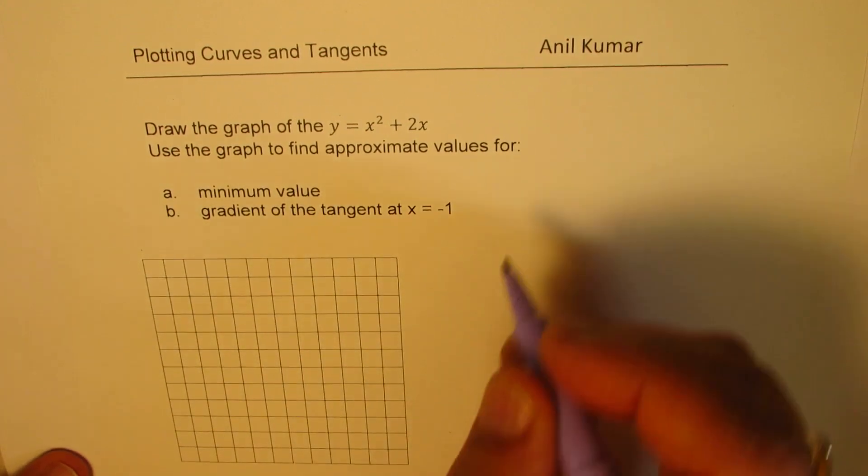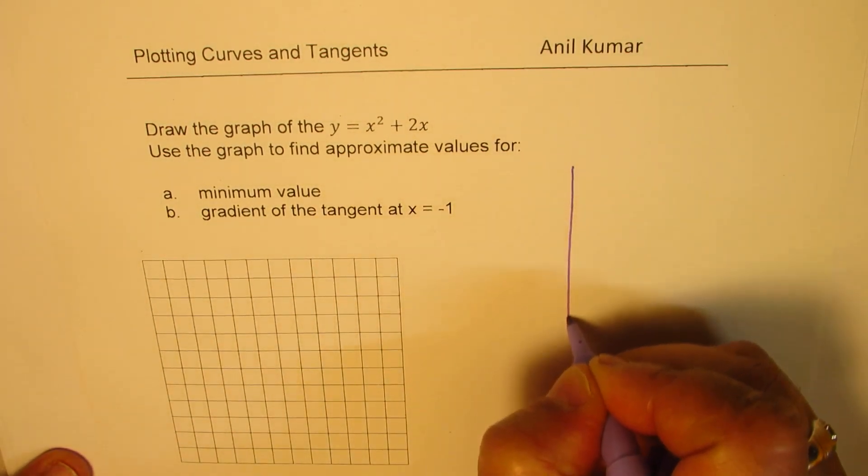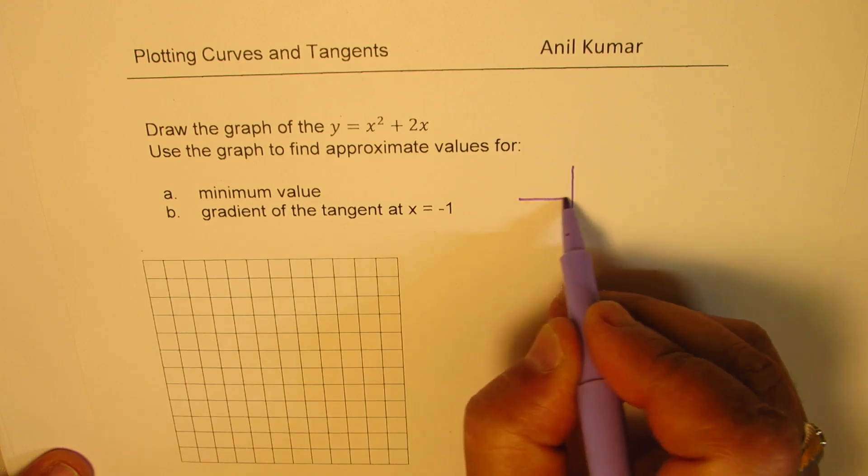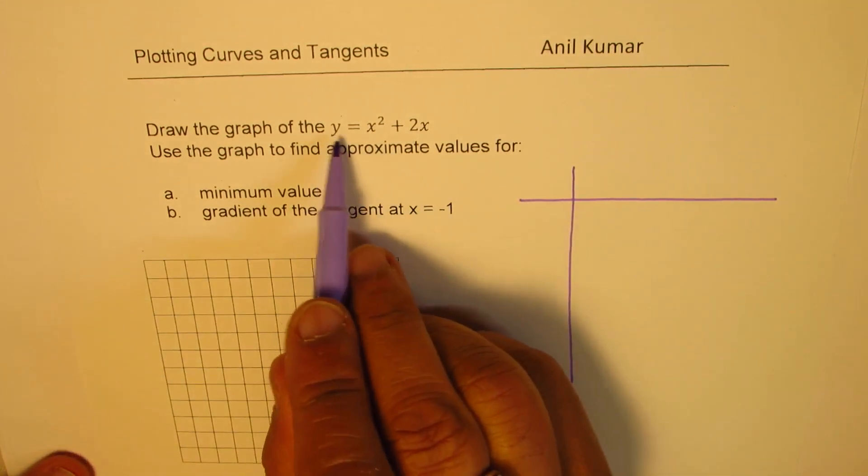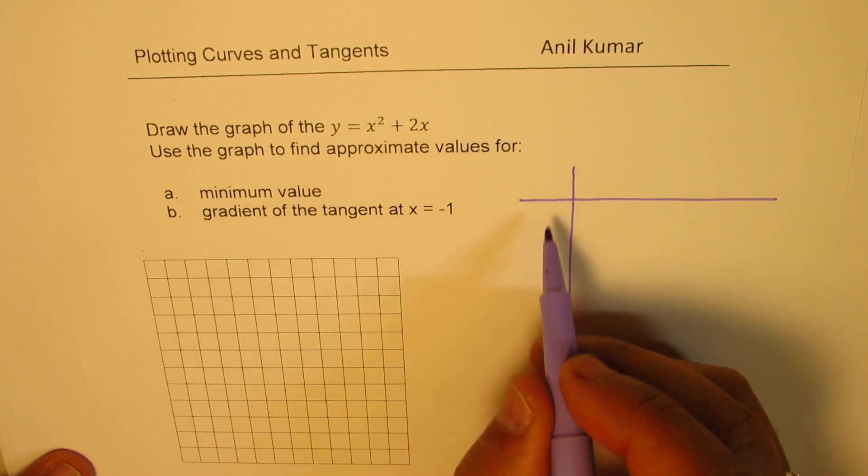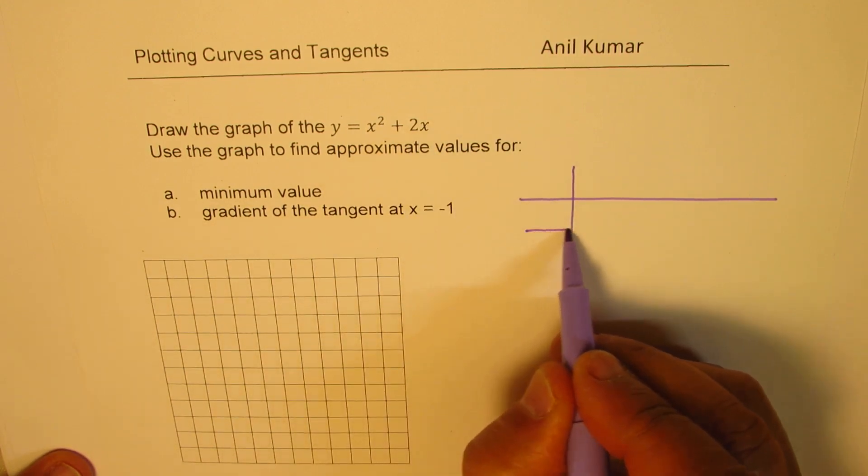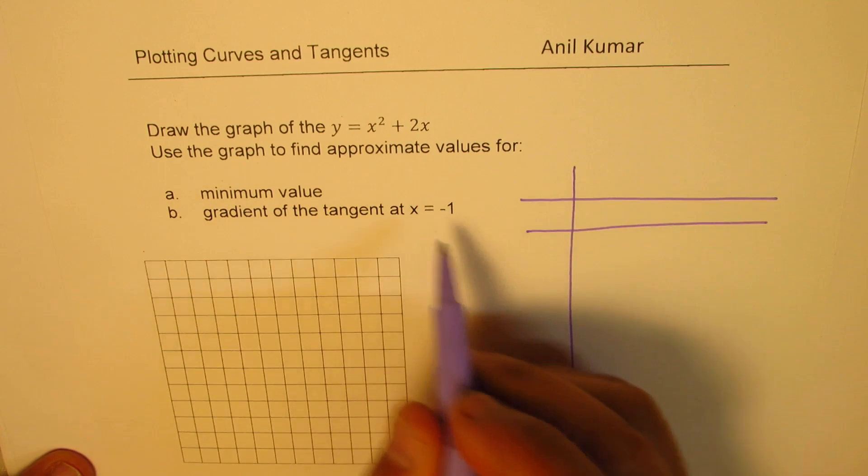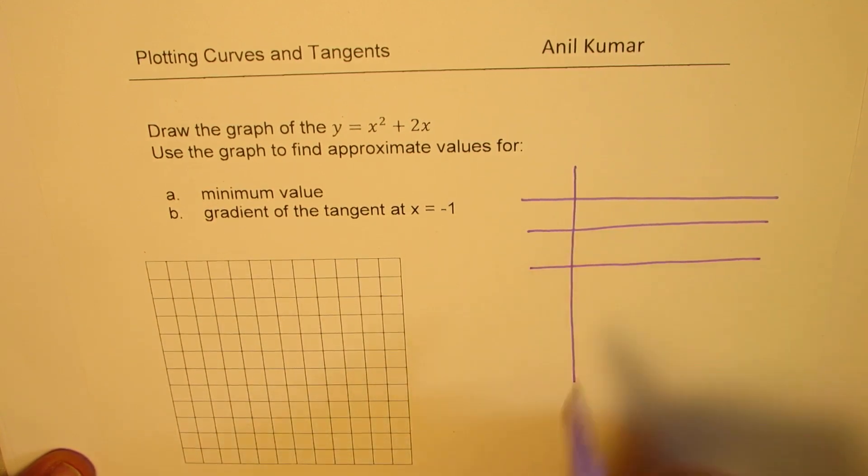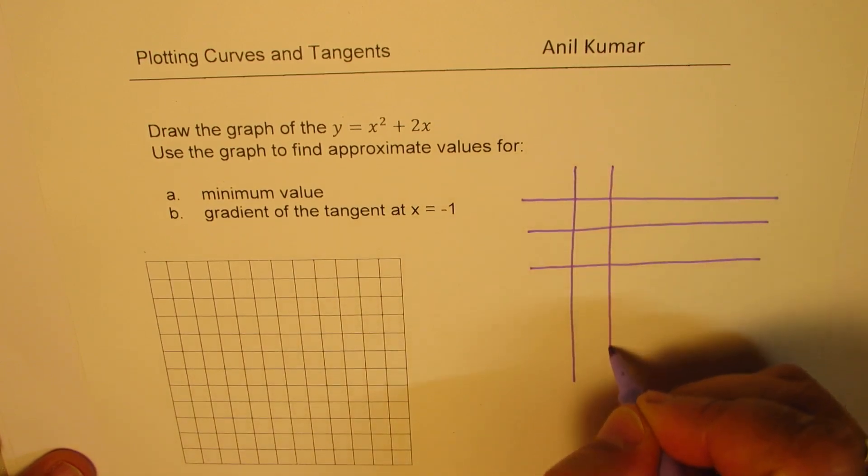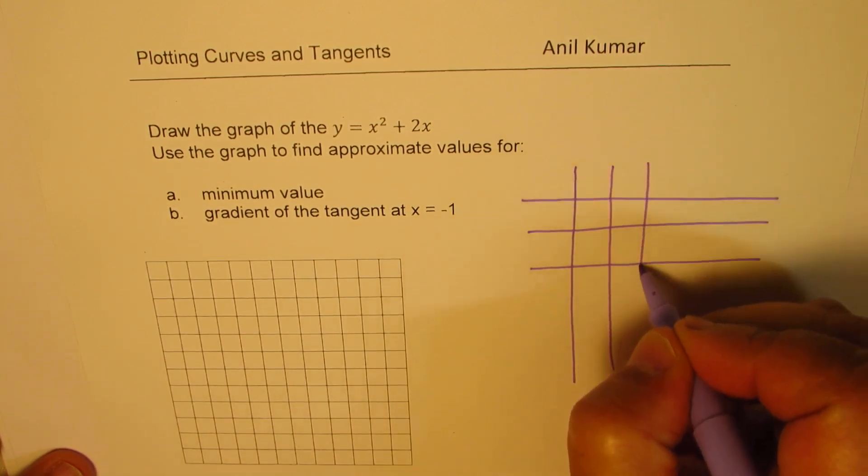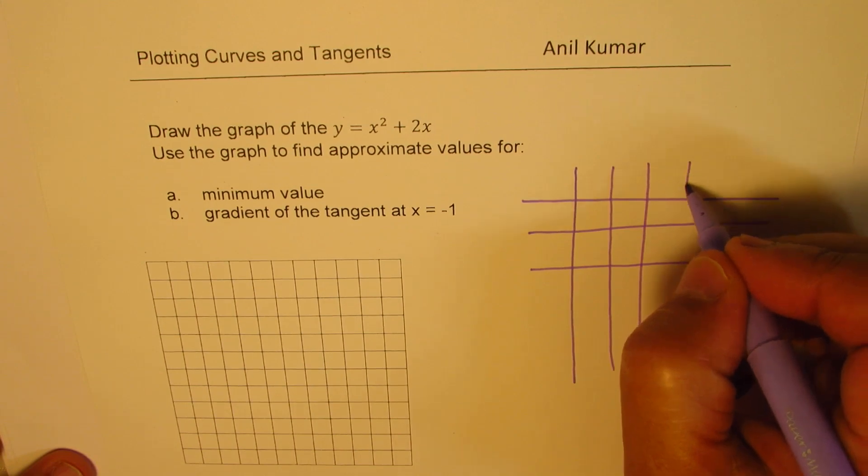So to draw the graph, let's take some key values and then we are going to sketch using the coordinate points. So y is x² + 2x. We'll take different values of x and calculate what is x² and what is 2x and then add them. We'll take a few values starting with, let's say, minus 1.